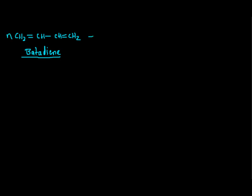N moles of butadiene (CH2=CH-CH=CH2) is treated with N moles of acrylonitrile (CH2=CH-CN), also called vinyl cyanide.